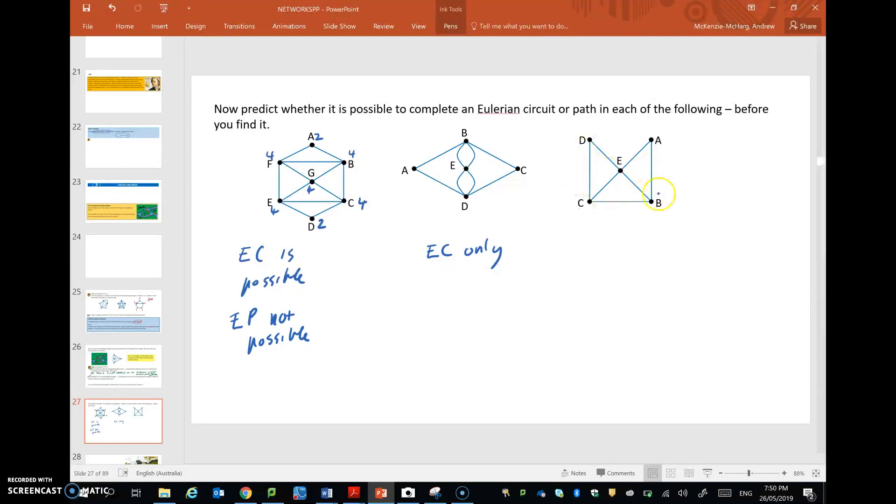This last one here, okay, D, degree 2, 2 there, 4 for E. Now B and C are both degree 3, so two odd vertices. So an Eulerian path is possible.